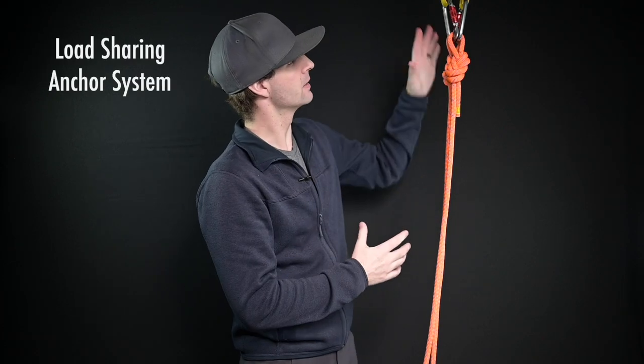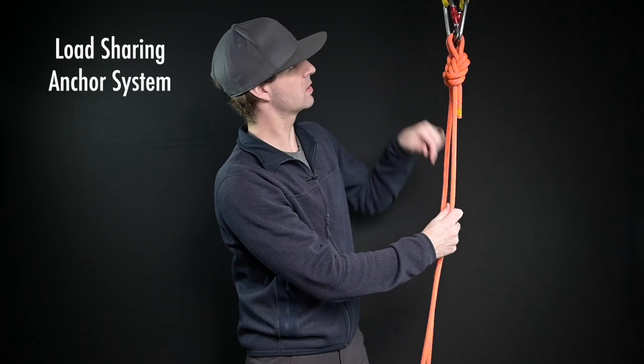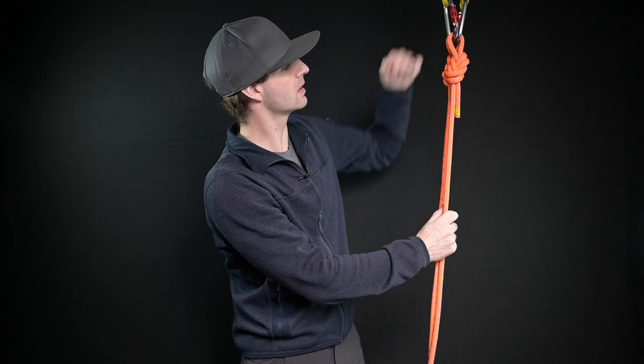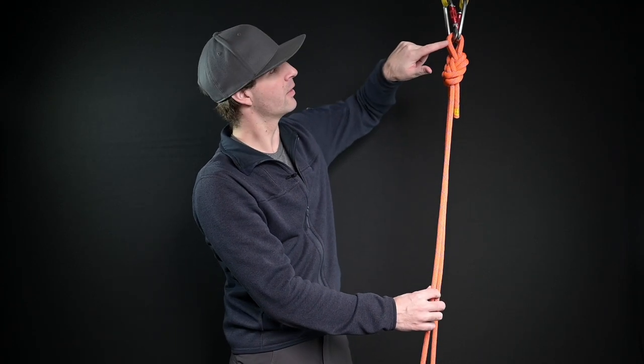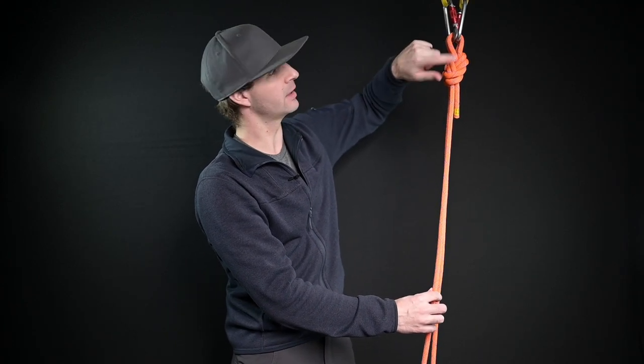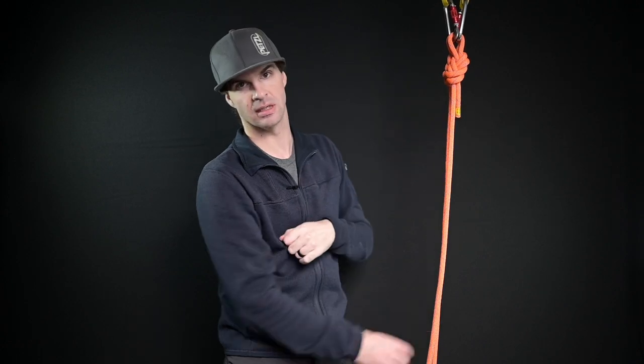Next up is the load sharing anchor. Alright so we see that here we have two ropes going into two carabiners, two slings. So if I apply any tension to this one rope I'm going to then equally apply the pressure amongst more gear. So I have the two carabiners and the two slings.